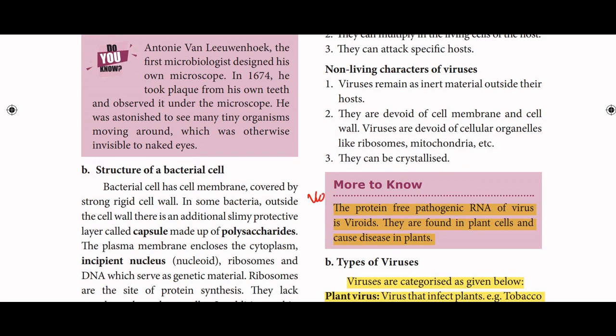Next, viroid: the protein-free pathogenic RNA of a virus is called a viroid. They are found in plant cells and cause disease in plants.